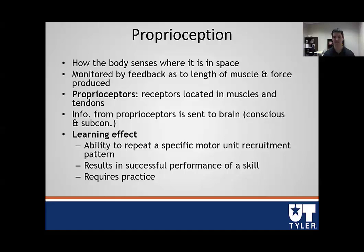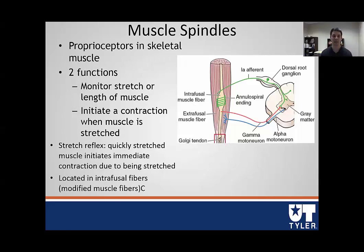We'll talk about that later in the Golgi tendon section. The first proprioceptor we're going to talk about is the muscle spindle. The muscle spindle is the primary and only proprioceptor in skeletal muscle. It has essentially two functions: it monitors the stretch or the length of the muscle, and the second function is to initiate a contraction when the muscle is stretched. This is one of those subconscious reflexes. The very easy analogy to think about here is the knee tap reflex, right? When you go to the doctor, they tap on your tendon.